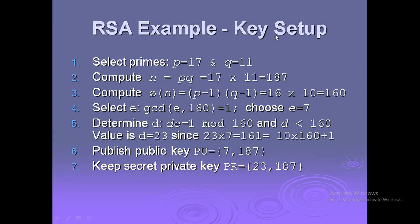RSA example — key generation: select primes p = 17 and q = 11. Compute n = 17 × 11 = 187. Compute phi(n) = (16)(10) = 160. Select e such that gcd(e, 160) = 1; choose e = 7.